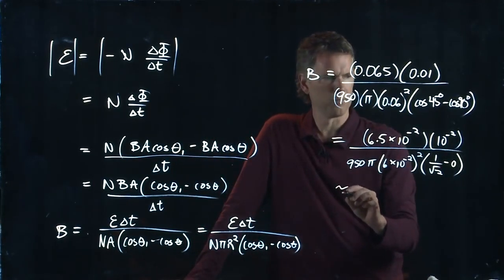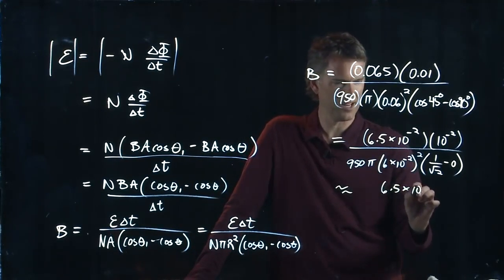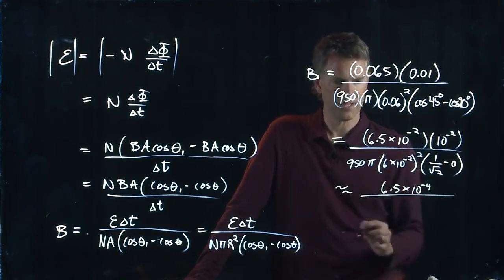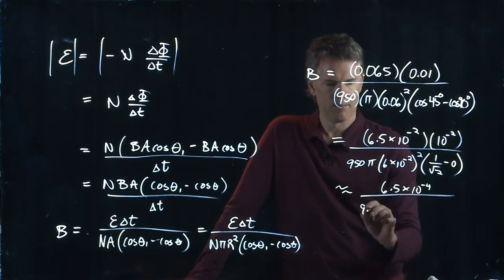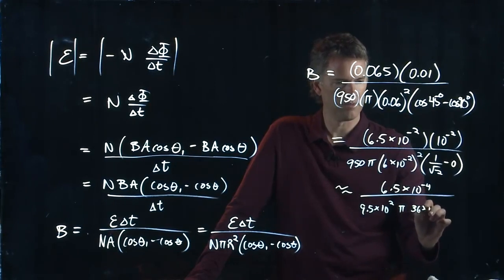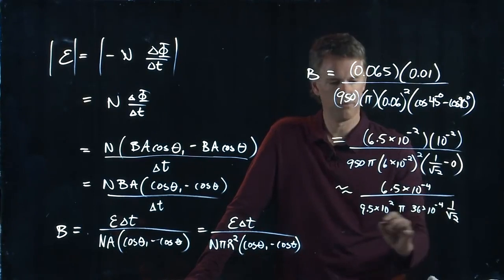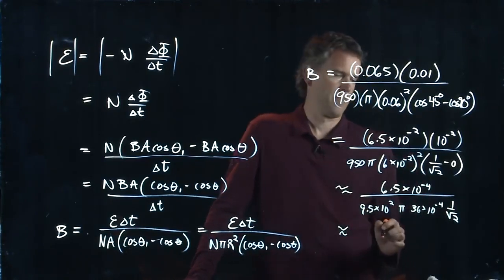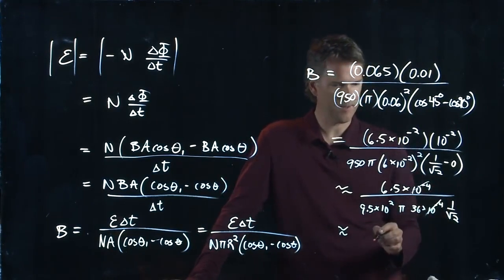Let's approximate it here while you guys punch it into your calculator. So we've got 6.5 times 10 to the minus 4 up top, we've got 9.5 times 10 to the 2, we've got a pi, we have 36 times 10 to the minus 4, and then we have a 1 over root 2. Let's see what this becomes - 10 to the minus 4 drops out with that.